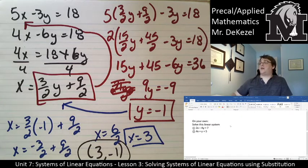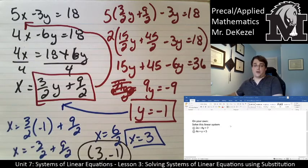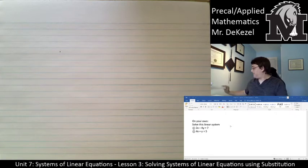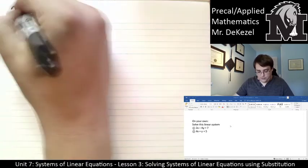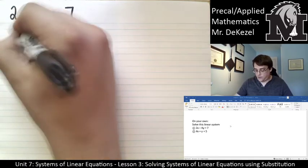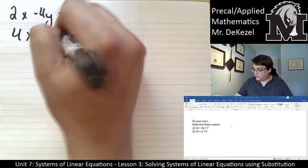So there is one for you to try on your own. Go ahead and give that one a go and unpause it when you're done and see if we got it right. Okay, so we have 2x minus 4y is equal to 7 and 4x plus y is equal to 5.